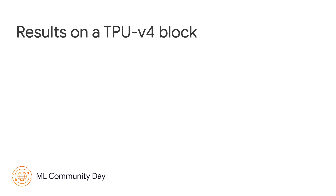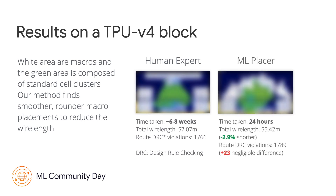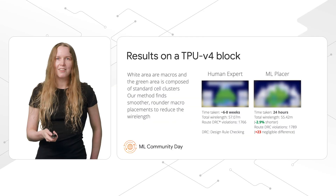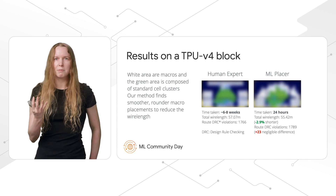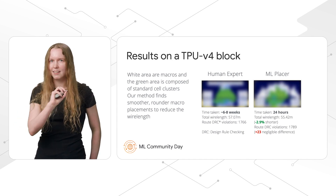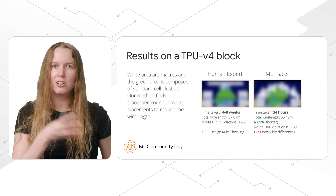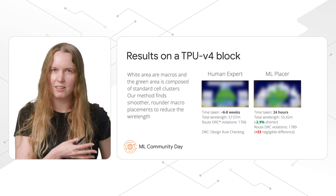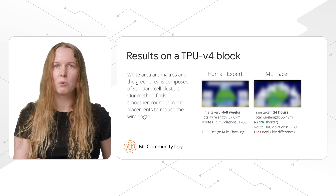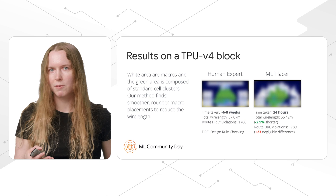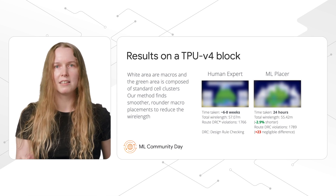Here are some results on a TPU v4 block. We have to blur these images due to confidentiality, but the white regions are macros and the green regions are clouds of standard cells, or logic. The machine-learned placement has a more rounded, organic-looking shape, whereas a human expert placement has a very rigid-looking shape. This rounded shape actually allows the machine-learned placement to minimize the wire length needed to connect the macros to the logic in the center. The human expert placement took six to eight weeks to generate, whereas the machine-learned placement took only 24 hours — and we've since reduced the runtime so that we can now generate placements in under six hours.